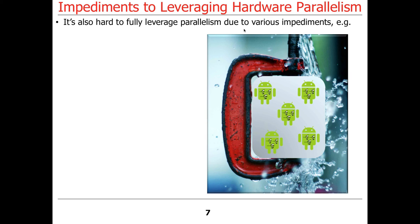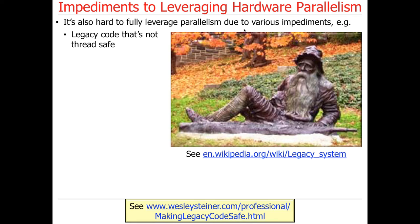Moreover, even if you have a multi-core machine or mobile device, it's sometimes hard to fully leverage parallelism due to impediments thrown in our way by various software layers. One issue is that a lot of older code — what we call legacy code — isn't designed to be thread-safe. Legacy code was typically written in previous generations of hardware and software, so it's often single-threaded, and people haven't really understood how to use multi-threading until recently.